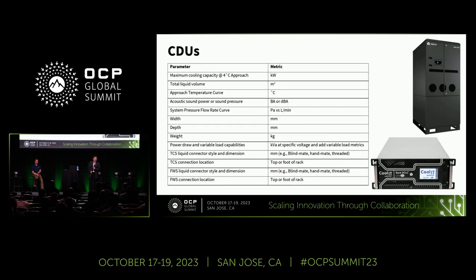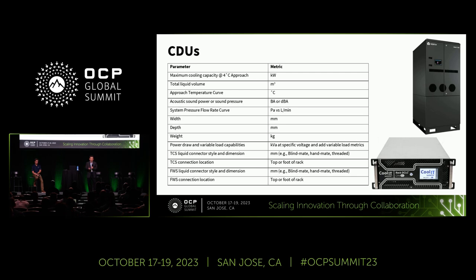Next is the CDU. The CDU usually defines capacity by kilowatt. All the other liquid volume varies from vendor to vendor. Weight, width, and depth are all defined by the vendor. You have some other criteria like the facility water system and TCS water system, all defined in the different tables in our white paper.